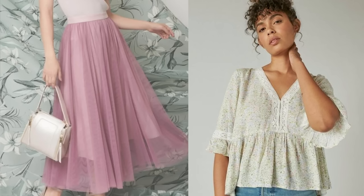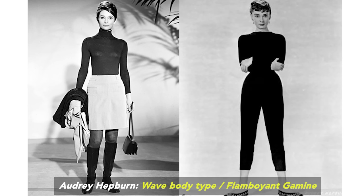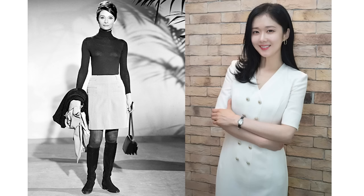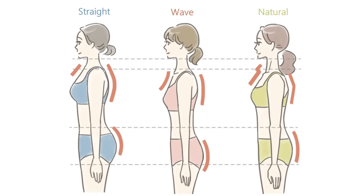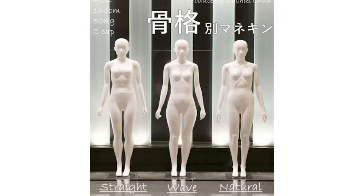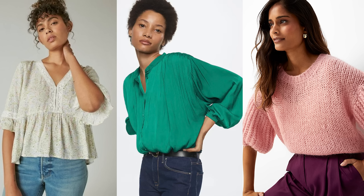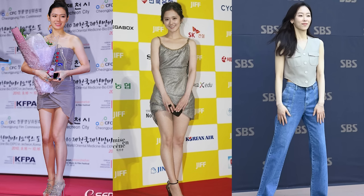Then we've got the wave type. My guess was that it would be a parallel to a soft gamine, but apparently Audrey Hepburn would be considered a wave type, and she's a flamboyant gamine in Kibbe. I think there are similarities in bone structure between the wave body type and gamines, because they're both petite. The wave body type is supposed to be the most delicate and small-framed out of the three, and they're supposed to have a long torso, which parallels the vertical elongation that flamboyant gamines are supposed to have. Given that the system originated in Japan, most examples are Asian, so I couldn't find many parallel examples verified in both systems — but here are some Asian celebrities that have been typed as wave.